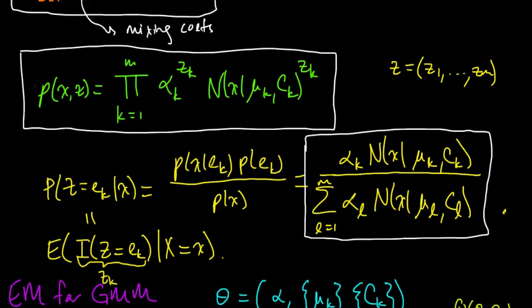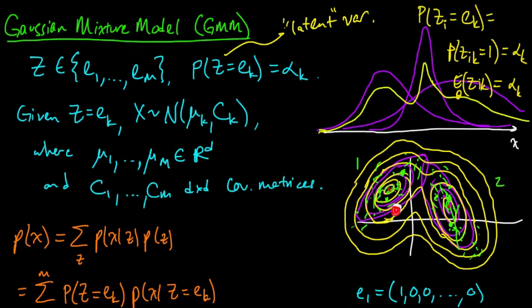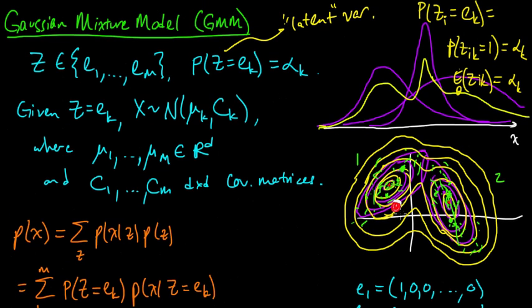People sometimes refer to this as the responsibility, or more precisely, the responsibility taken by the k-th component in the mixture. If you think about this example, if X was here, then the responsibility, the probability of this guy—it's probably intuitively clear, but to be rigorous, you would have to check the formula.